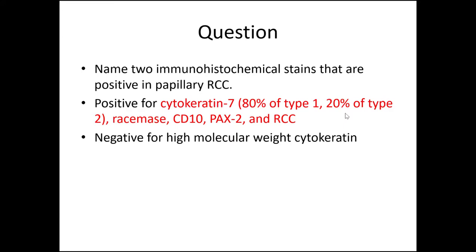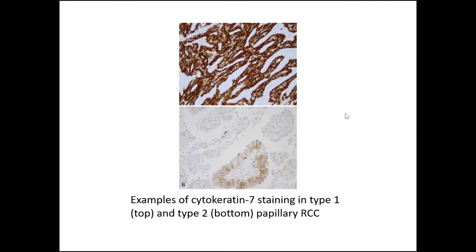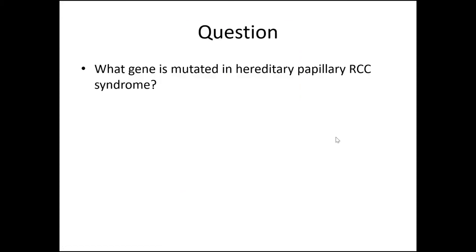Papillary renal cell carcinoma should be negative for high molecular weight cytokeratin — for example, cytokeratin 903 or cytokeratin 5/6. The reason to mention this is that you don't want to misclassify a papillary urothelial carcinoma as a renal cell carcinoma. Here is an example of cytokeratin-7 staining in a type 1 papillary RCC and the more patchy expression seen in most cases of type 2 papillary RCC.